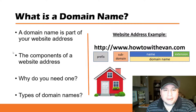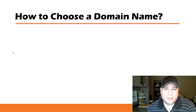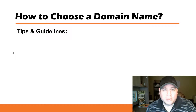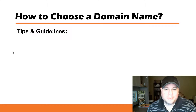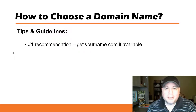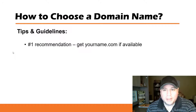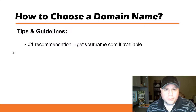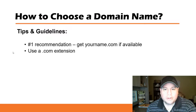Let's get into how to choose a domain name. A lot of people don't think about this and sometimes make big mistakes, so it's a good idea to go over some tips and guidelines. My number one recommendation is to get yourname.com — so if your name is Bob Smith, go see if bobsmith.com is available. And you want to try and use a .com extension where possible.